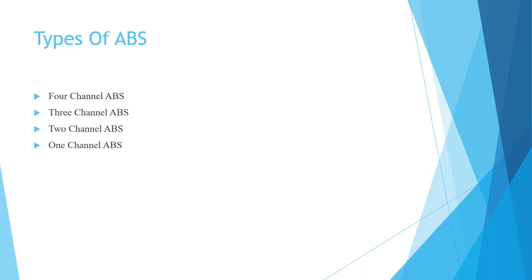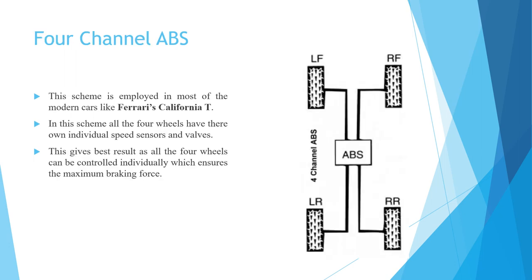There are basically four types of ABS systems: four-channel ABS, three-channel ABS, two-channel ABS, and one-channel ABS. The four-channel ABS scheme is employed in most modern cars. In this scheme, all four wheels have their own individual speed sensor and valves. This gives the best result as all four wheels can be controlled individually, which ensures the maximum braking force.